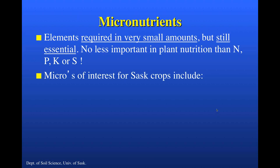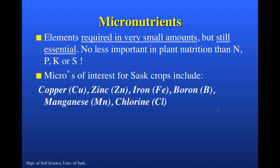In terms of micronutrients of interest for Saskatchewan crops, these include copper, zinc, iron, boron, manganese, and chlorine. There are also functional nutrient elements like molybdenum and cobalt, which are involved in nitrogen fixation but for which deficiencies are unheard of in the prairies. For today's discussion on micronutrients in pulse production, the nutrient elements I'm going to emphasize are copper, zinc, and iron.